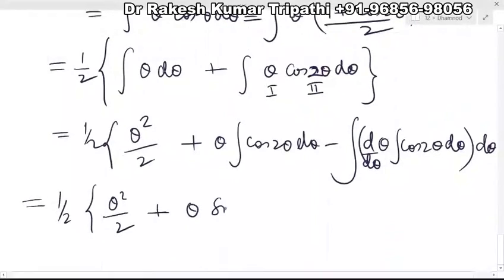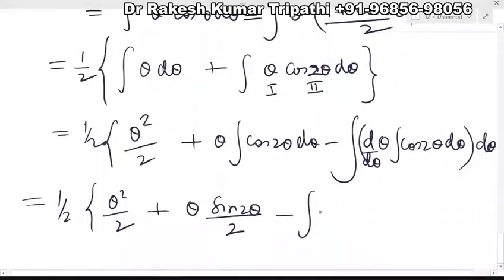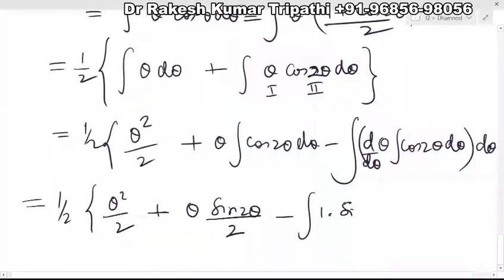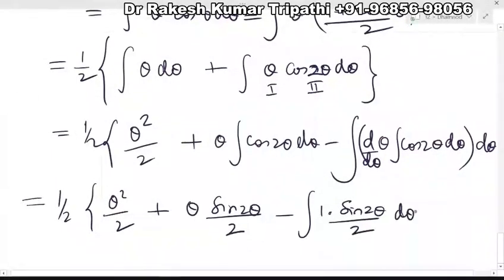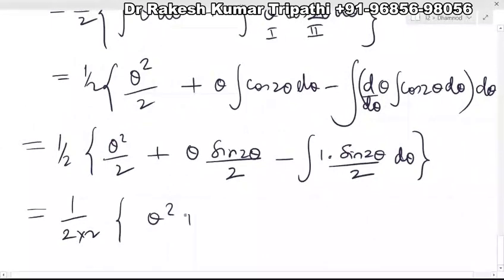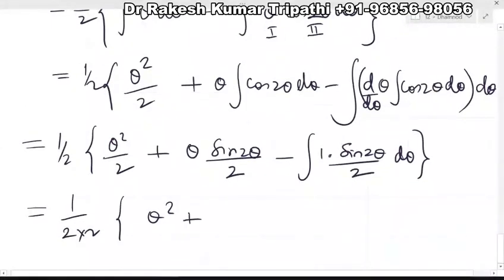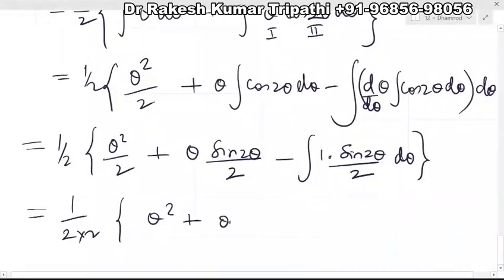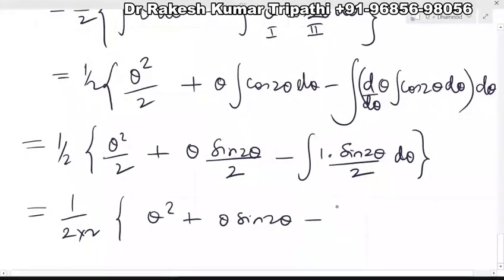Dividing by the coefficient of 2θ which is 2, minus differential of θ is 1, integral of cos 2θ is sin 2θ upon coefficient 2, into dθ. Simplifying, taking 2 common from denominator, we get θ² plus θ sin 2θ minus the integral of sin 2θ, which is minus cos 2θ upon 2, plus integral constant C.